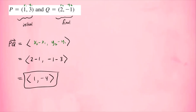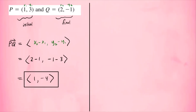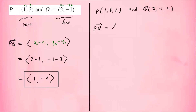In three dimensions you can do the same thing, except you now have a z component as well. For example, if p has coordinates (1, 3, 2) and q has coordinates (2, −1, 4), the vector from p to q — where p is the initial point and q is the final point — has components x2 minus x1, y2 minus y1, and z2 minus z1.